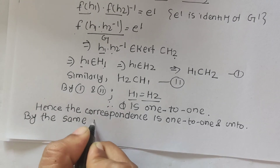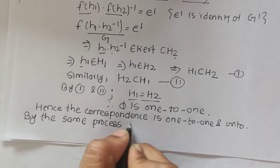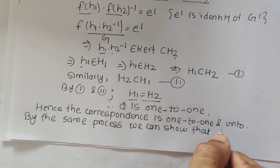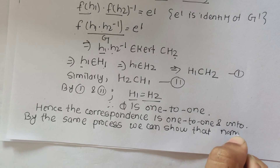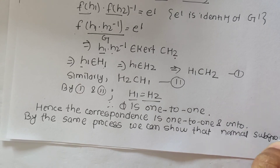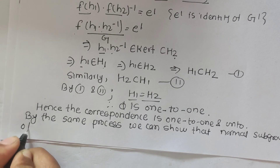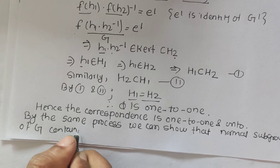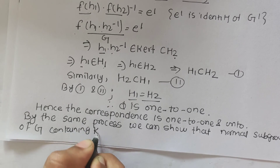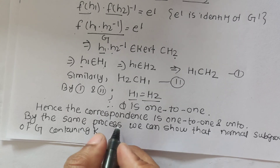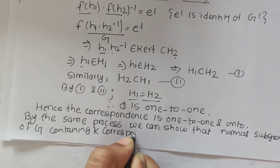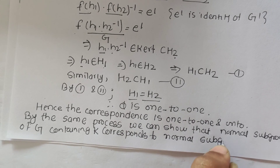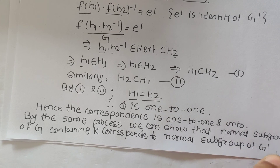Not only for simple subgroups, but also for normal subgroups, by the same process we can establish the same correspondence. Then the normal subgroup of G' and normal subgroup of G also correspond under this mapping. So by the same process we can show that normal subgroups of G containing K correspond to normal subgroups of G'.